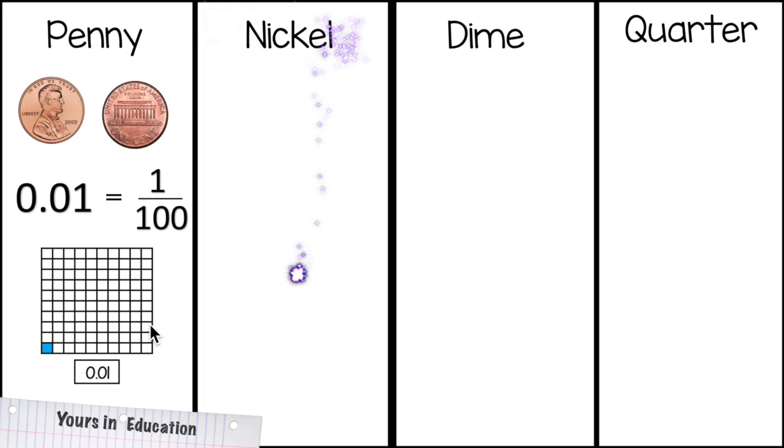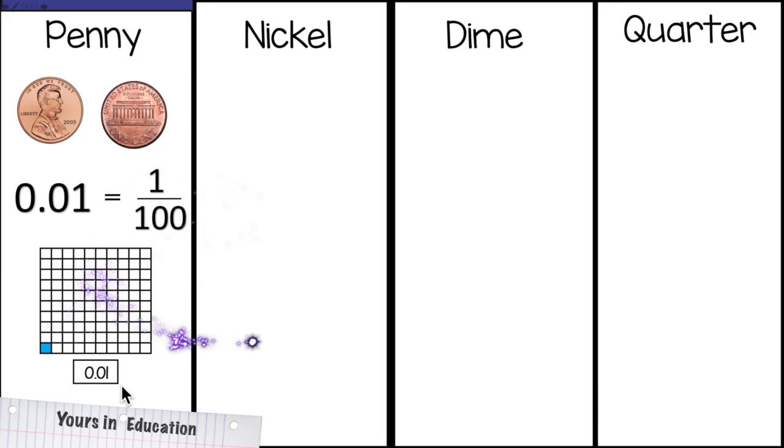And in decimal model, as you can see, this is divided in 100 parts, and you're shading 1, and this is 1 hundredth.